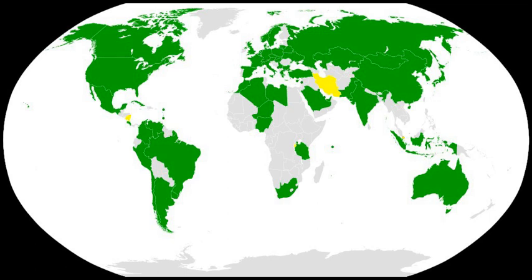Further recommended data extensions include: the geostationary orbit location, if appropriate; any change of status in operations, such as when a space object is no longer functional; the approximate date of decay or re-entry; the date and physical conditions of moving a space object to a disposal orbit; and web links to official information on space objects.